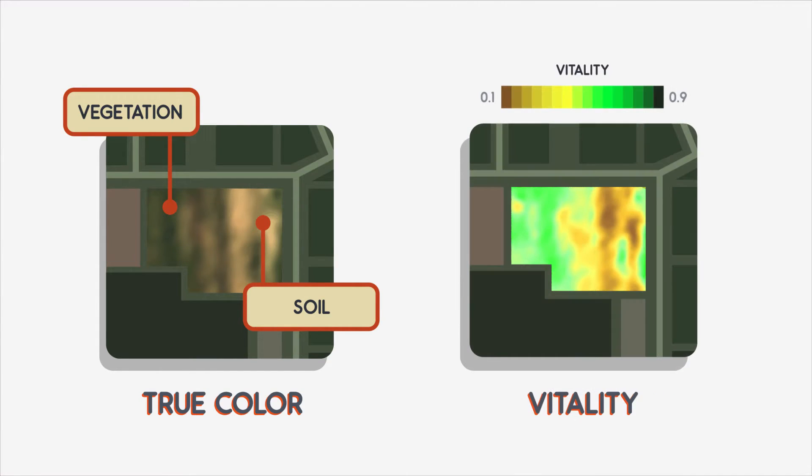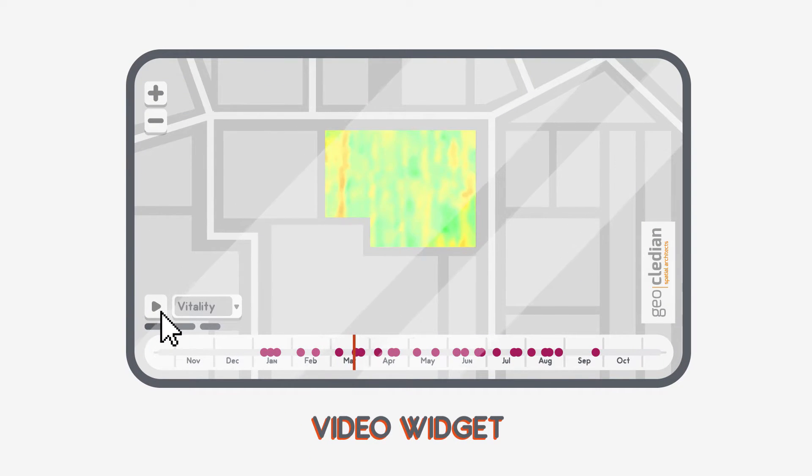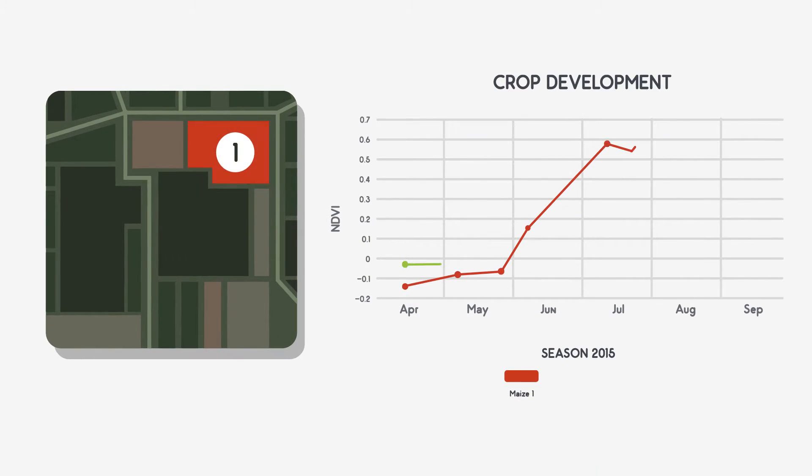True color and vitality images help to check the crop's growth and overall health, while variation maps highlight a field's different growth regions. Our analytics tools allow you to see how the land is developing and to compare it with other fields.